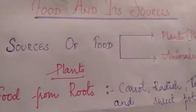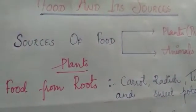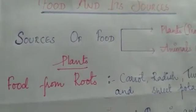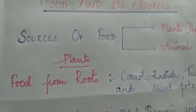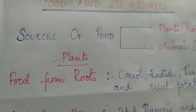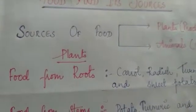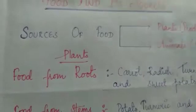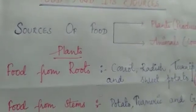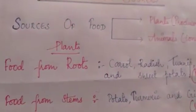Good morning to all and I welcome everyone to this class. We all are eating food — all organisms need food for their survival and growth. Food has different benefits: food protects us from diseases, it replaces our damaged cells, it helps in our growth and survival. So now we have to study from where we get food, that is the sources of food.